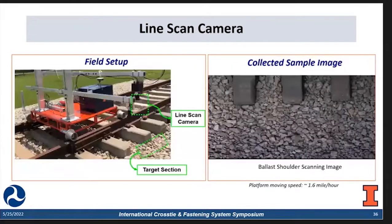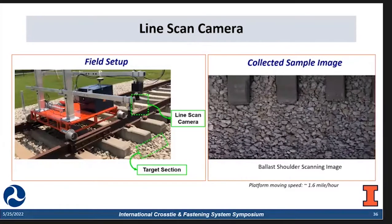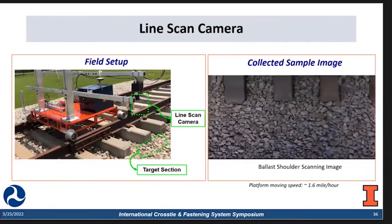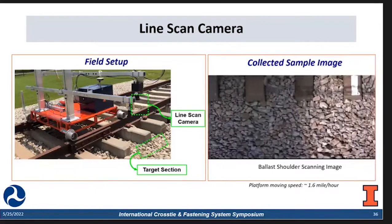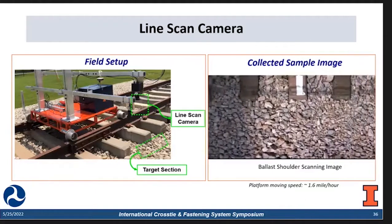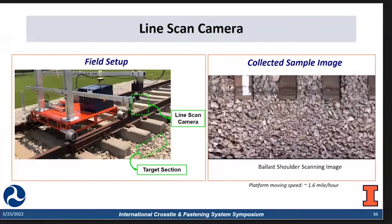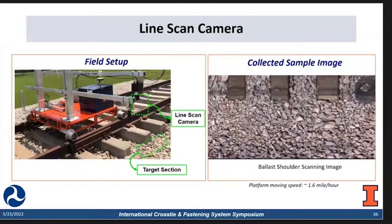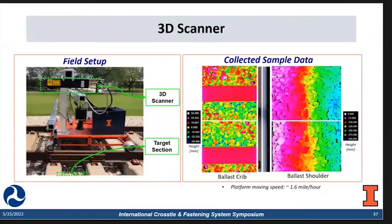Next, we have how we set up the line scan camera in the field and what the collected images look like. We are showing a video here because the line scan camera produces a long scan of the whole track. We just display an image of this to show what the whole strip looks like. Then we have the 3D scanner, which provides a height map of the target section. On the left, we have the detailed height map of the cross-ties and the ballast. On the right, we can clearly get the slope information of the shoulder.